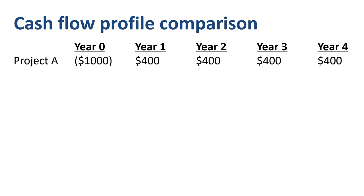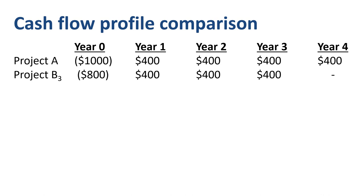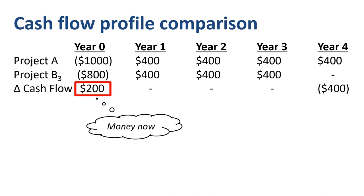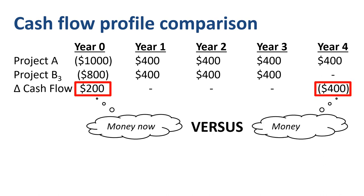That changes when we compare project A to project B3. Project B3 has the advantage of a lower upfront investment, which is good news for its chances of becoming the preferred project, but the disadvantage of having no expected benefits in year 4. Looking at the cash flow differential, you are really looking at a difference of $200 now versus a difference of $400 four years from now.